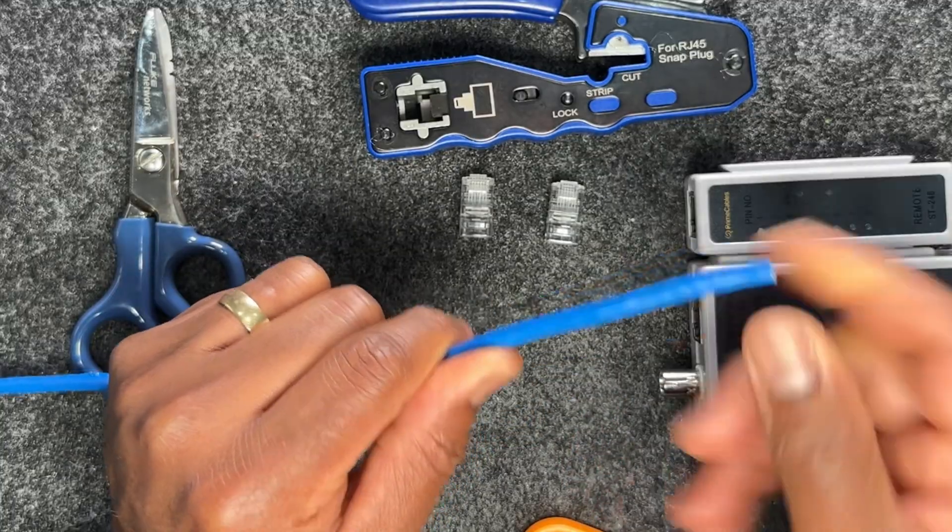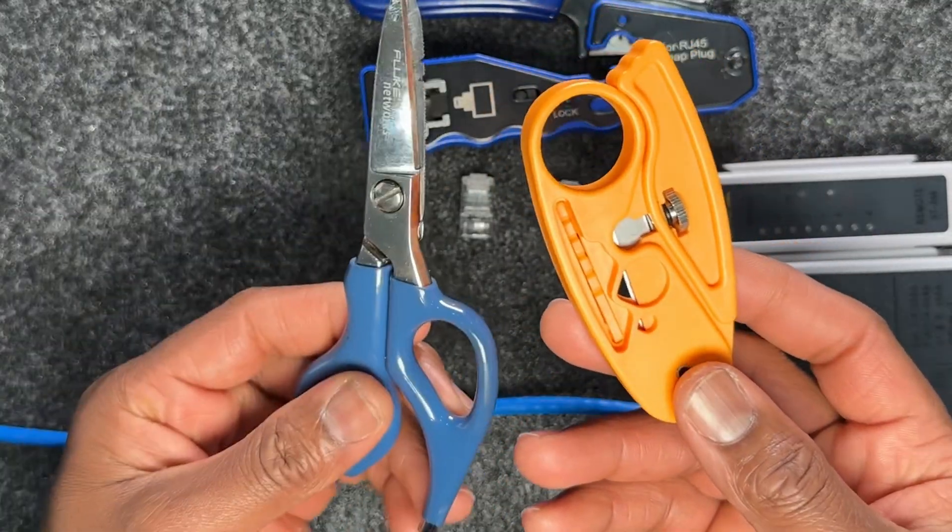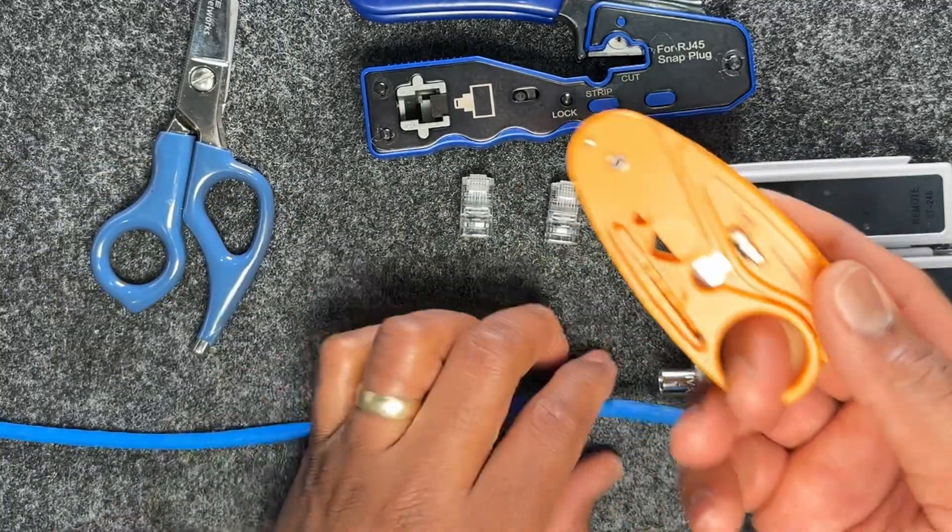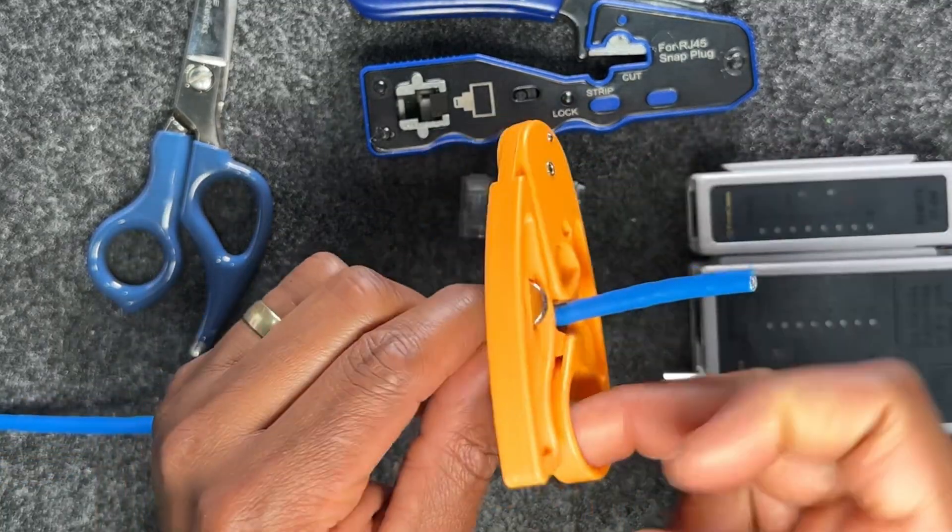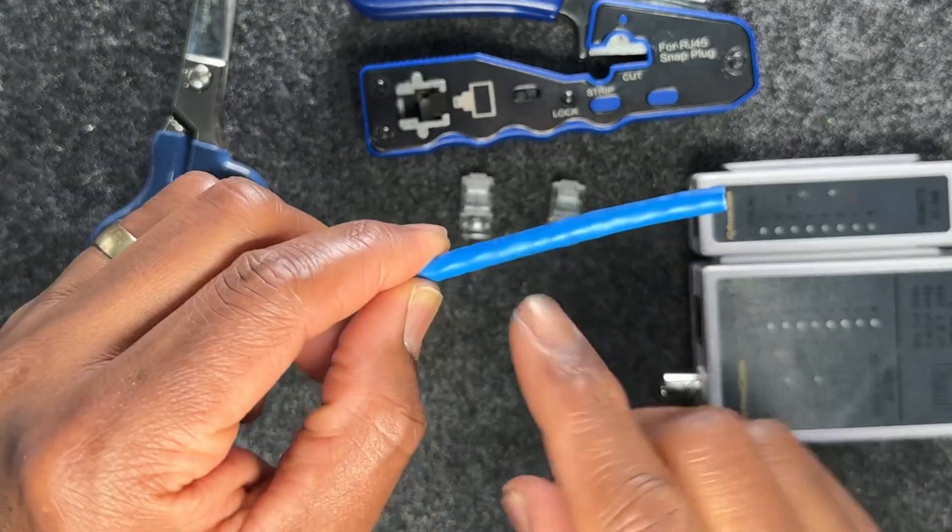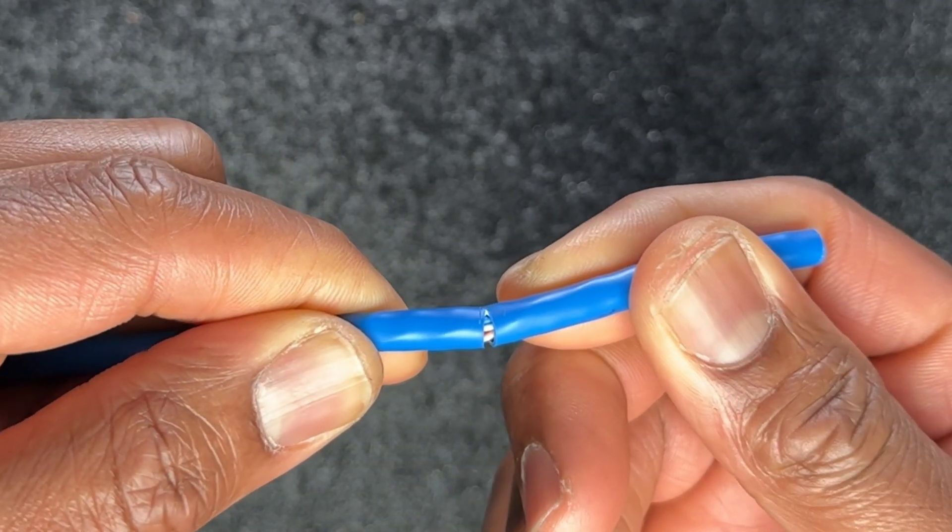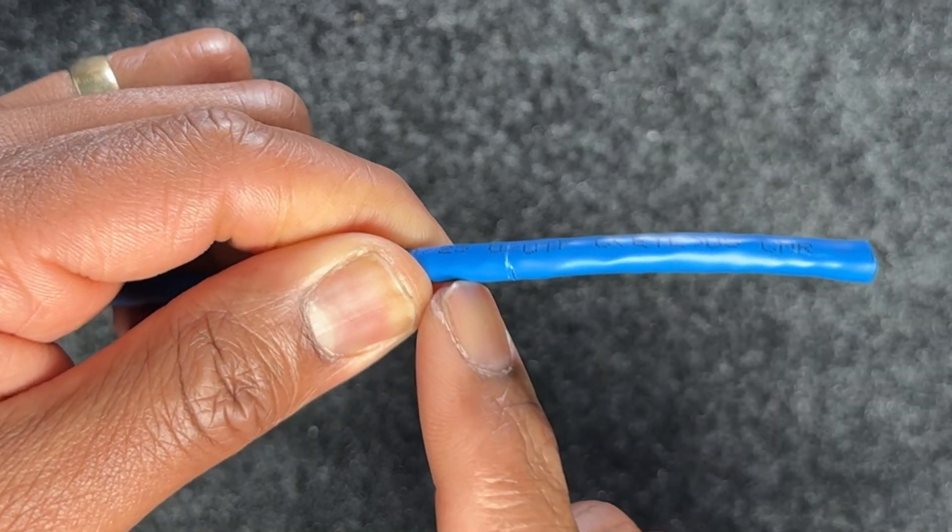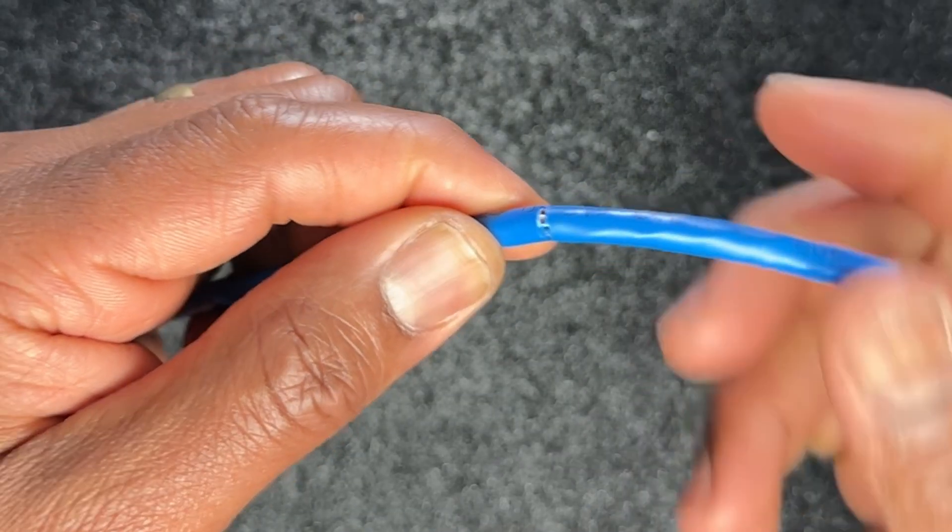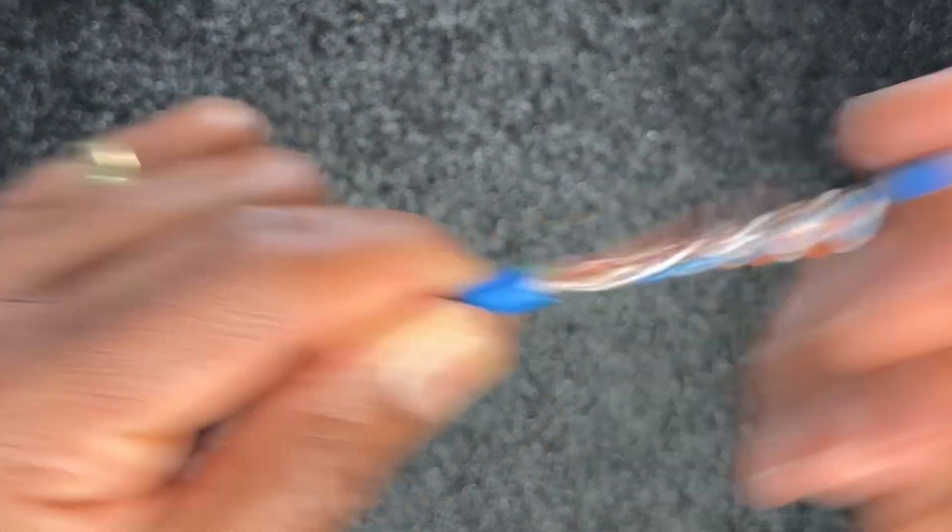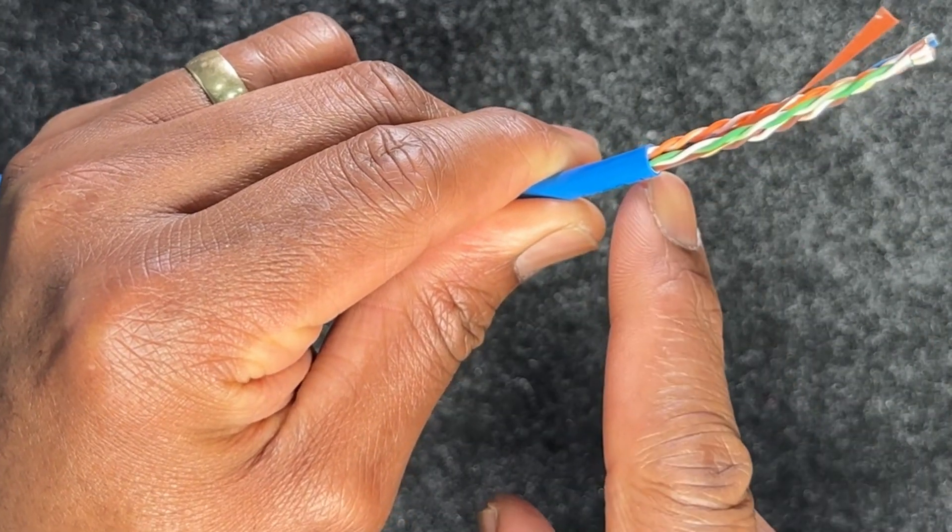First, I'm going to strip about one to two inches of the jacket. I could use my cable stripper or my lineman scissors, depending on which you're comfortable with. Since my tool has been calibrated, I'm going to insert it about two inches and give it one quick spin. I can see there's a score on the jacket right here. Once I bend it, it just breaks open like that.